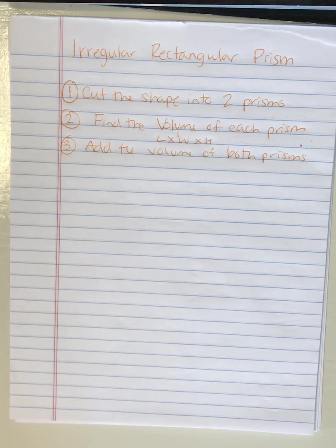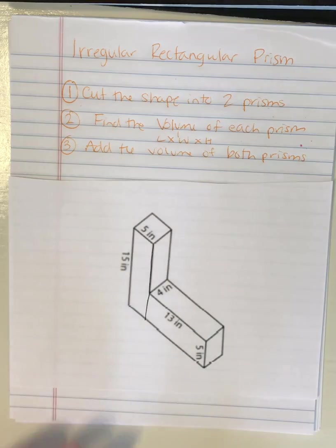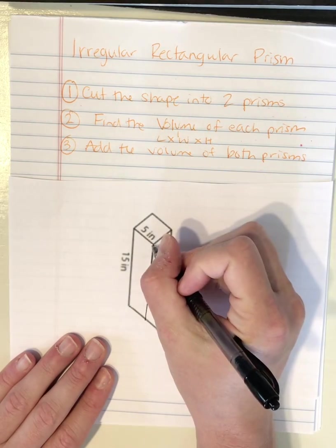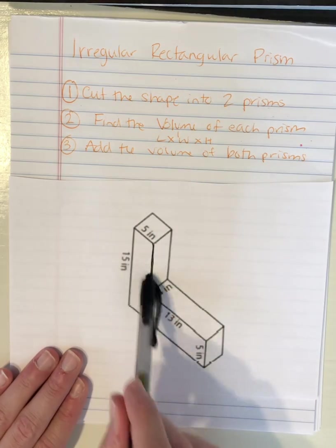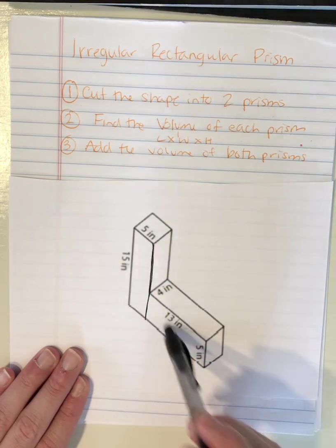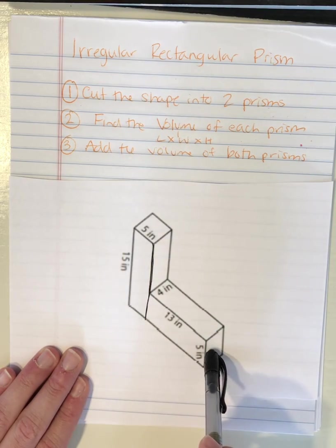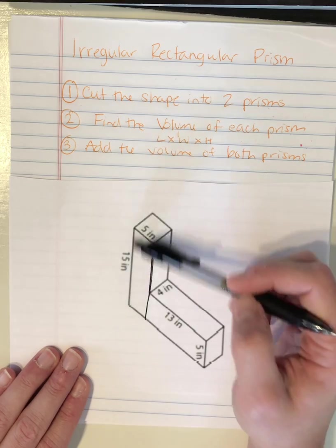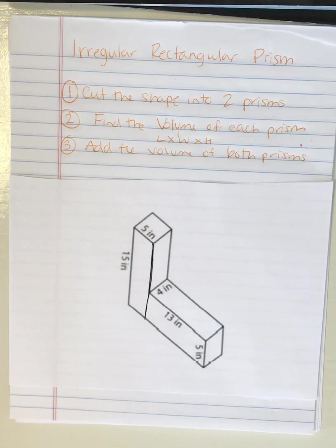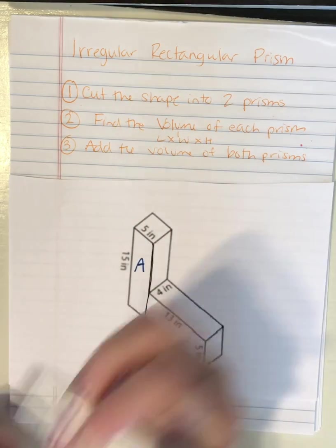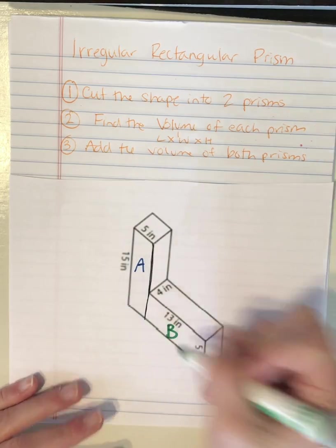So I have this shape right here that we're gonna go over together. I already did step one and I cut this shape right here so that I have this longer rectangular prism and then this vertical or horizontal rectangular prism. So this vertical one is up and down and then the horizontal one is looking like it's laying down. So let's call this one A and then this one will be B.